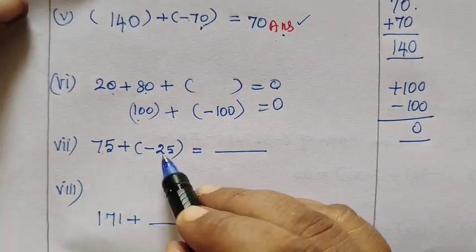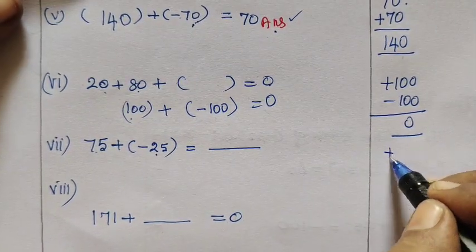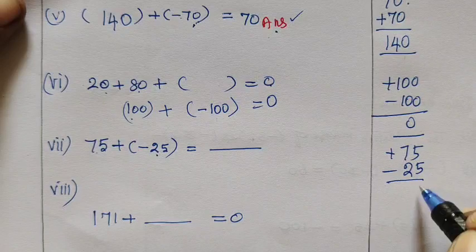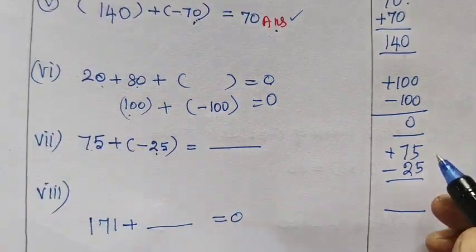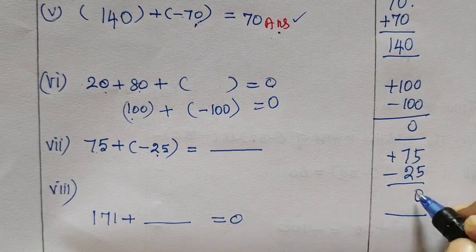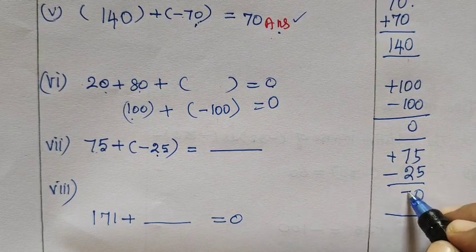Then 75 minus 25. So 75 minus 25. Opposite sign is separate. Same sign means add, opposite sign is separate. Now 5 minus 5 is 0. Then 7 minus 2 is 5.